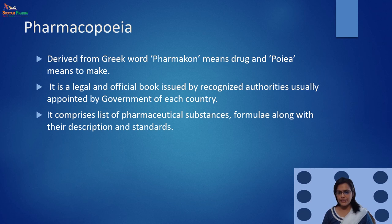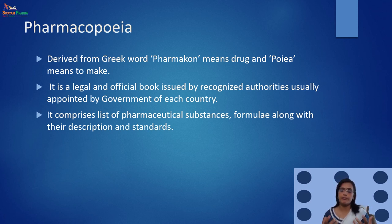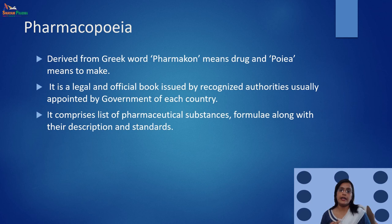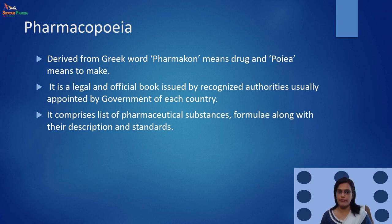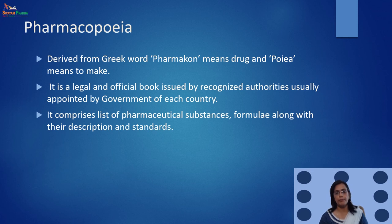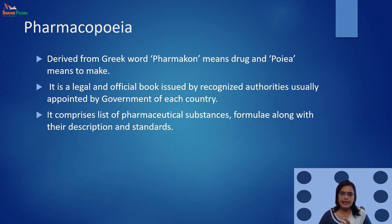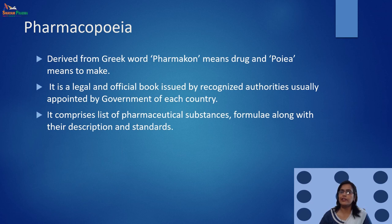If I try to explain pharmacopoeia in a very simple way, pharmacopoeias are just like the Bible, Quran, or Gita for pharmacy professionals — for pharmacy students, for pharmacy persons involved in academics or in pharma industry, or anyone associated with the pharmacy profession. The word pharmacopoeia is derived from the Greek words: pharmakon, meaning drug, and poia, meaning to make — so it means the making of drugs. It is a legal and official book issued by recognized authorities, usually appointed by the government of each country.